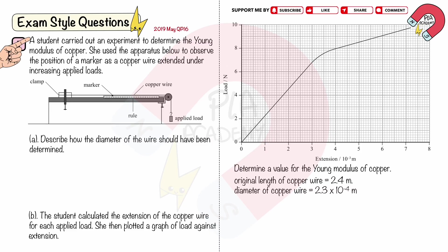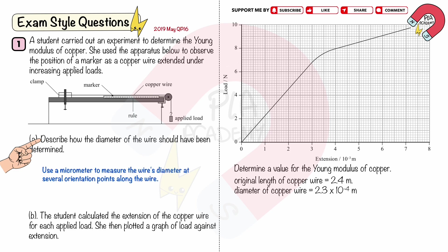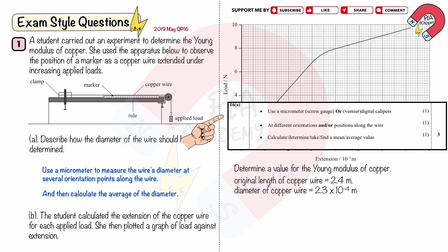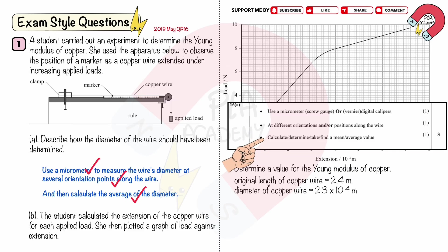Exam style question one: a student carried out an experiment to determine the Young's modulus of copper. She used the apparatus below to observe the position of a marker as a copper wire extended under increasing applied loads. Part A: describe how the diameter of the wire should have been determined. Use a micrometer to measure the wire's diameter at several orientation points along the wire, and then calculate the average of the diameter. You will get three marks for: using a micrometer screw or digital vernier caliper, measuring at different orientations and positions, and calculating the average of the diameter.